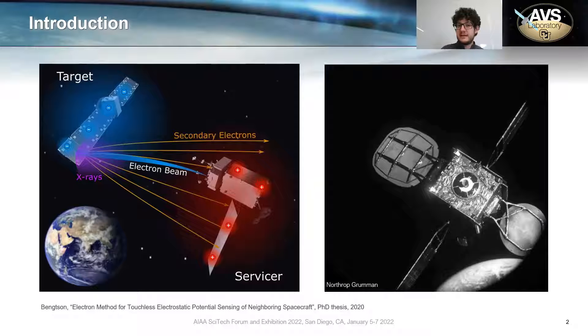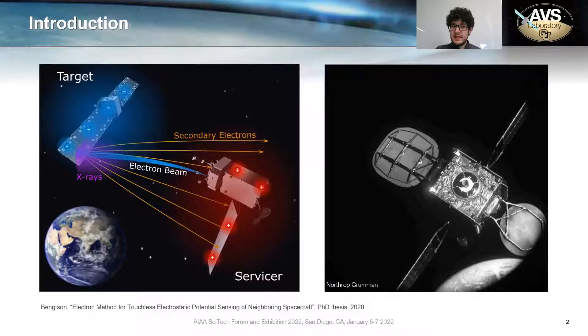This paper deals with an interesting concept that our laboratory has been developing during the last couple of years. The idea is to measure the potential of a target object in GEO-plus orbits, and the interest of this relies on the fact that electrostatic perturbations can have a significant effect in those orbits, and also that many interesting concepts related to space debris removal are based on generating a potential difference between a servicer and a target. However, in order to control those systems, we need to measure the potential of a target, and we need to measure it without direct contact between the servicer and the target object.